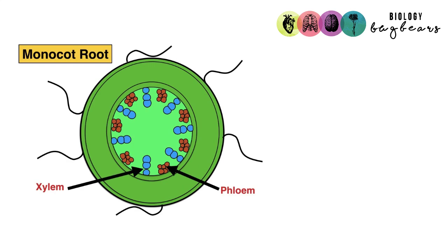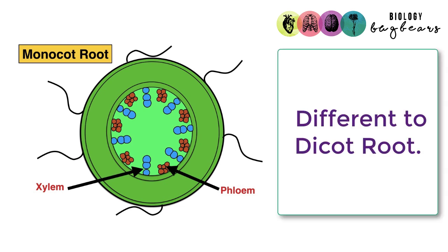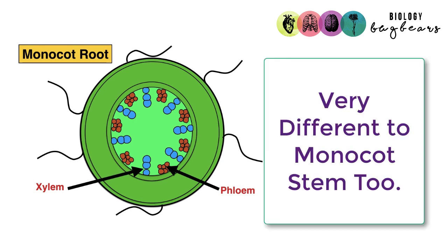This is a monocot root — a new diagram not found in your books, included here just for comparison. Notice it is completely different to the dicot root: there is no X or star shape for the xylem, and the phloem and xylem are arranged quite differently.